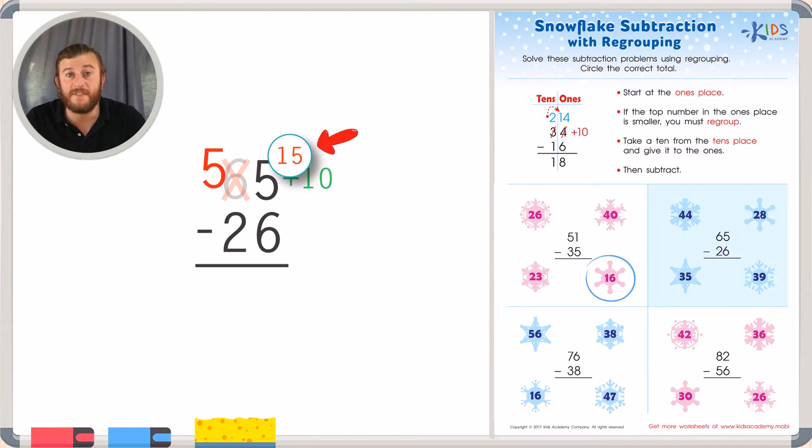Now we can subtract 15 minus 6. Counting up from 6 to 15, we get 9. 15 minus 6 is 9. And 5 minus 2, counting up we get 3. So we have an answer of 39. We can go ahead and circle our answer of 39.